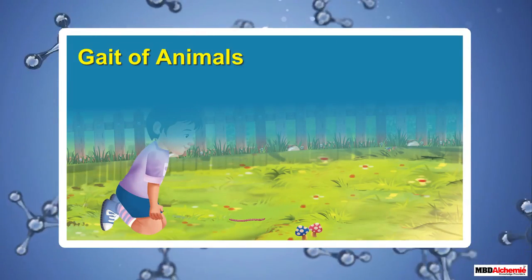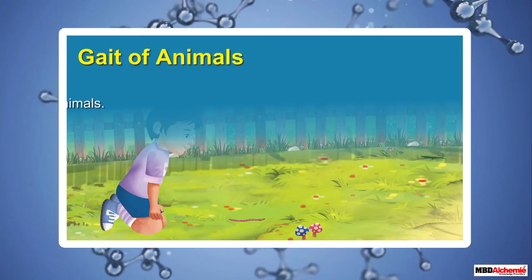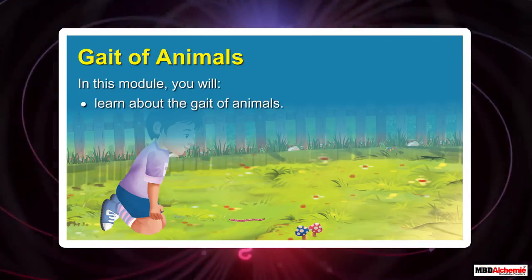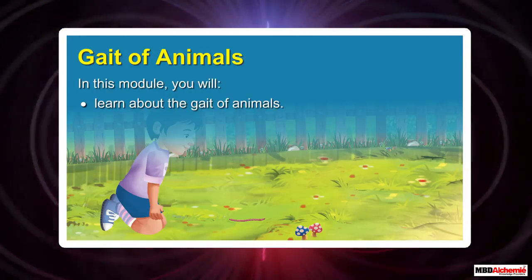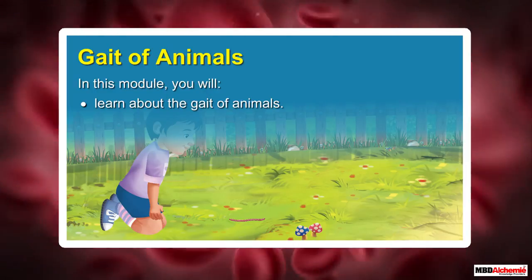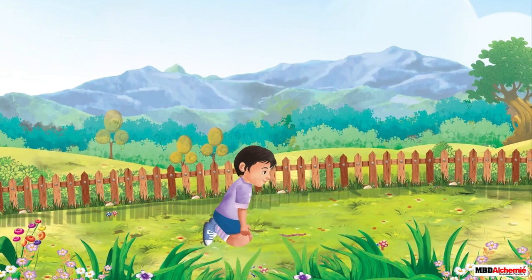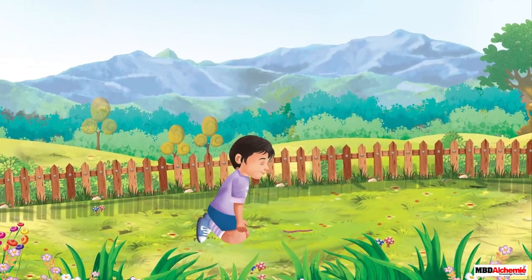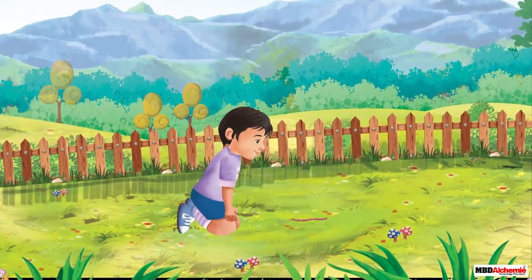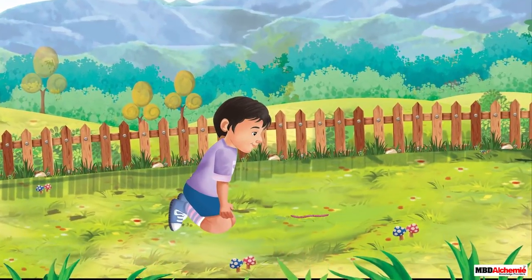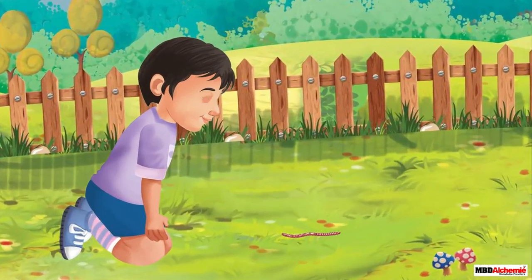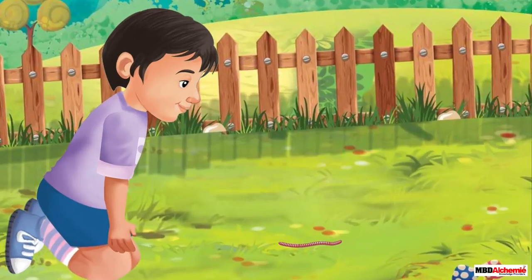Gate of Animals. In this module, you will learn about the gate of animals. Joseph is sitting in the garden. He is looking at something with a lot of interest. Let us look closer and see what he is looking at.